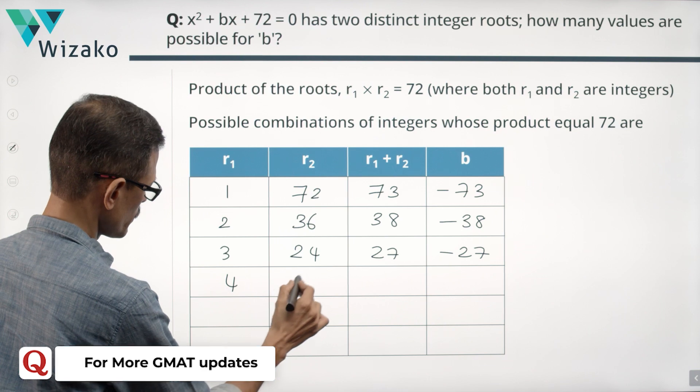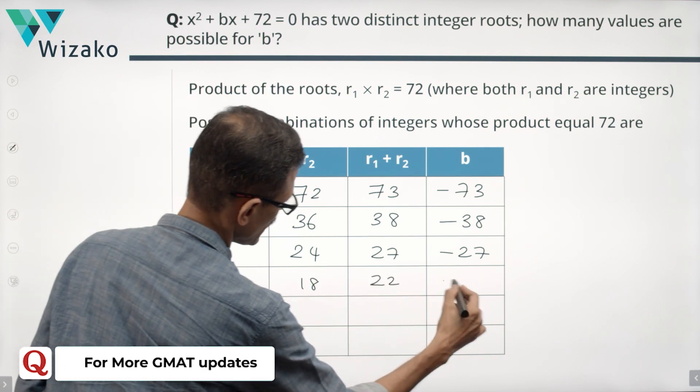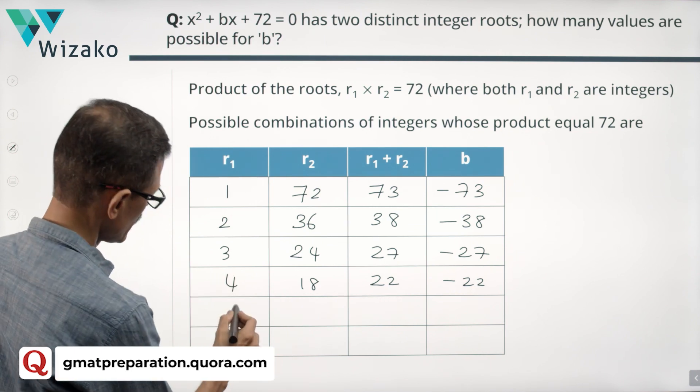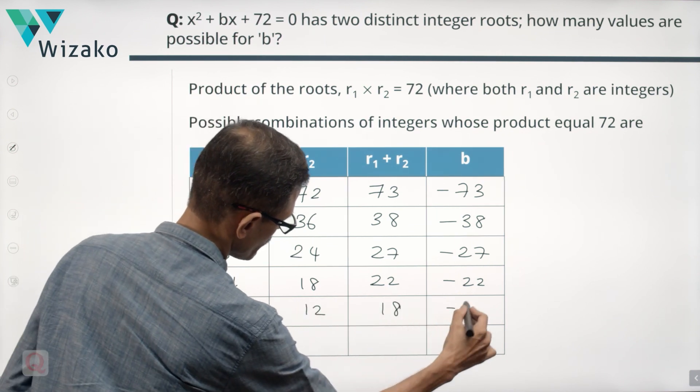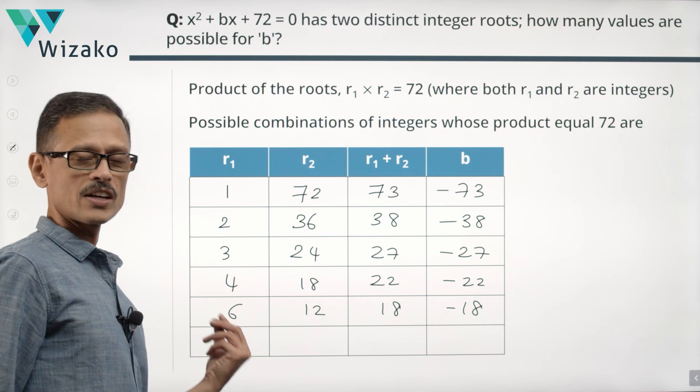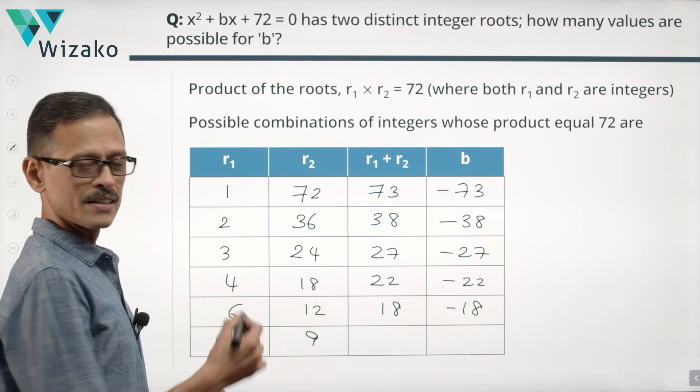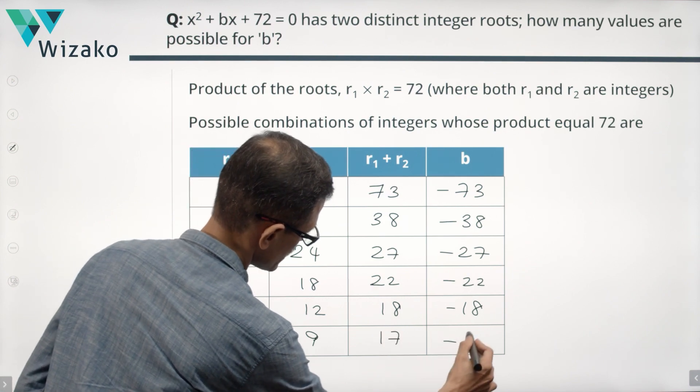4 is a factor of 72, 18 that makes it 22 and minus 22. 5 is not a factor of 72. 6 is a factor of 72, 6 correspondingly 12. Sum is 18. This will make it as minus 18. 7 is not a factor of 72. 8 is a factor. Correspondingly R2 will be 9. 17 is the sum minus 17.